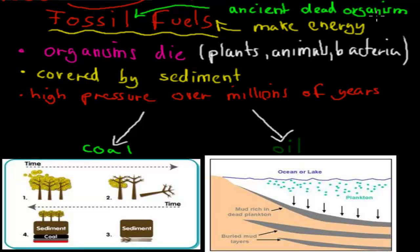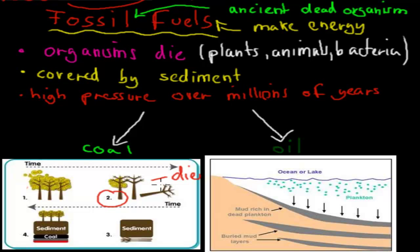Fossils are ancient dead organisms, and fuels means that we make energy out of them. So fossil fuels are dead organisms that we use to make energy. There are a couple of steps involved in creating fossil fuels. The first is that an organism has to die — plants, animals, or bacteria. In this diagram, we've got these plants being living, then in the second step they have died. After they have died, they have to be covered by sediment, which is similar to soil.